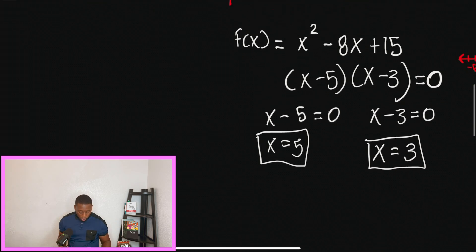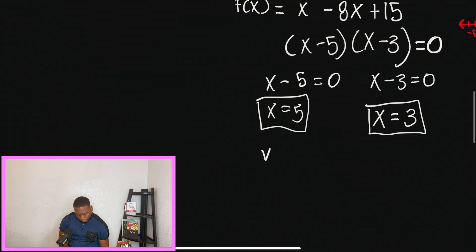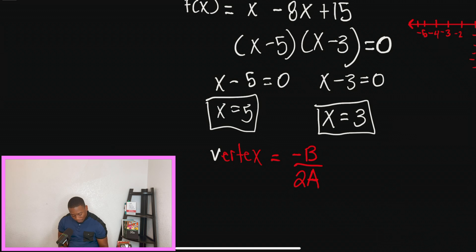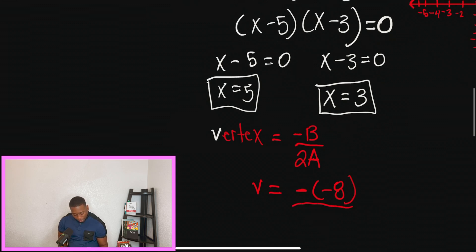I'm going to talk more about how to find the vertex. So we find the vertex with the equation: vertex equals negative B divided by 2 times A. And just remember, when we look at our original problem, B is negative 8. So if we're going to fill this in, we're saying that the vertex equals the opposite of negative 8 divided by 2 times A.